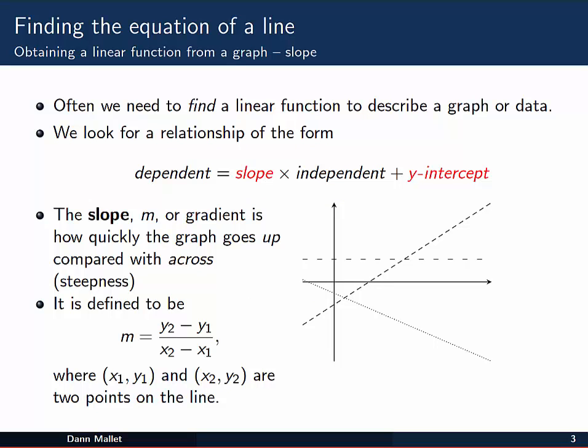So let's look at obtaining a linear function from a graph. Let's start off by looking at the slope. If we're looking for a linear relationship or a linear function, we're probably going to be wanting some sort of equation like this. The dependent value equal to the slope multiplied by the independent value plus a y-intercept.